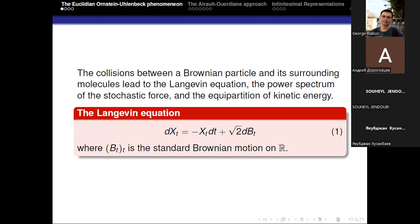It is well known that the collision of a Brownian particle in some stochastic media leads to the Langevin equation, which is the stochastic differential equation given by dX_t = (1 − X_t) dt + √2 dB_t, where B_t is the standard Brownian motion on ℝ. This equation is well studied in the n-dimensional case and also has generalizations to infinite-dimensional Hilbert spaces.